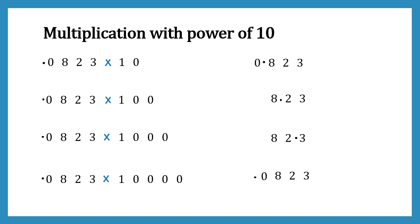Now multiplying 0.0823 by 10,000 means shifting the decimal point four places to the right. After shifting, the decimal point has no digit on its right side, so we remove the decimal point and the leading zero. Our answer becomes 823. These two examples demonstrate decimal multiplication with powers of 10, and I hope it clears your doubts about multiplying with powers of 10.